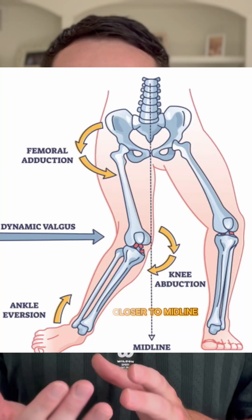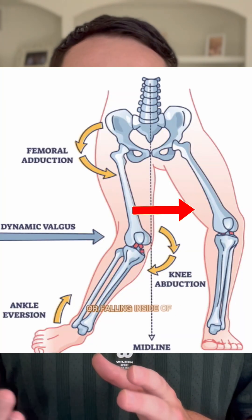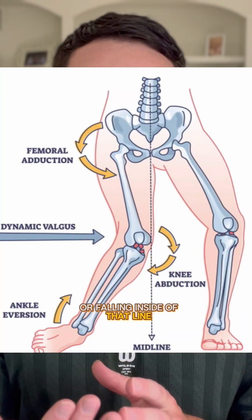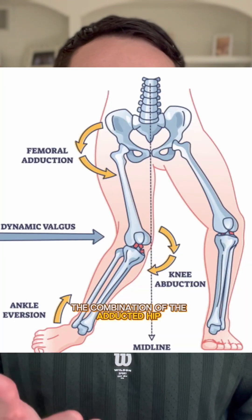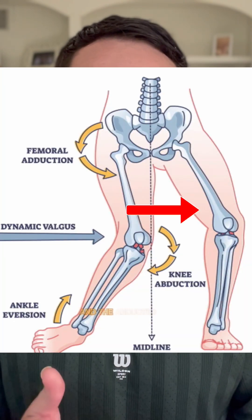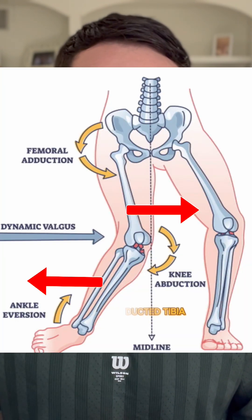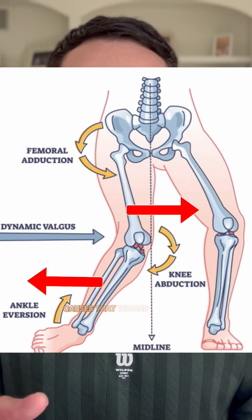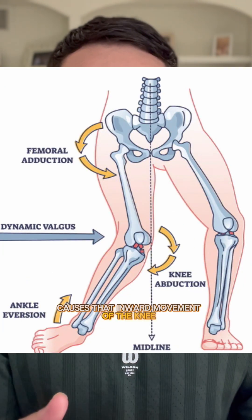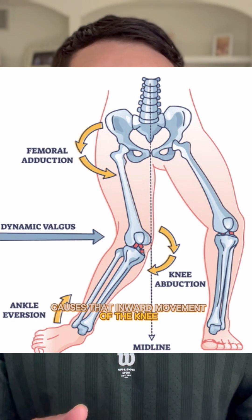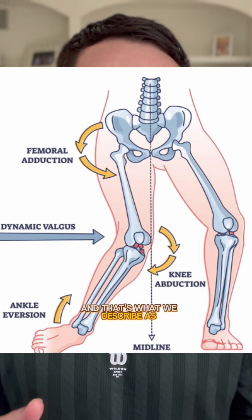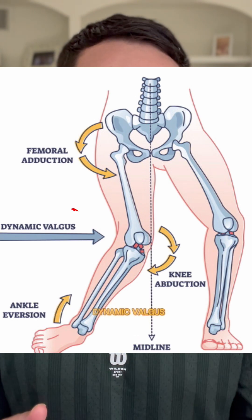The hip, or the femur, is actually adducting — moving closer to midline or falling inside of that line. The combination of the adducted hip and the abducted tibia causes that inward movement of the knee, and that's what we describe as dynamic valgus.